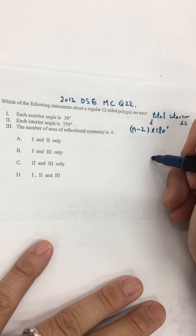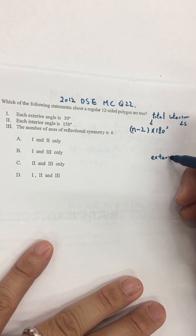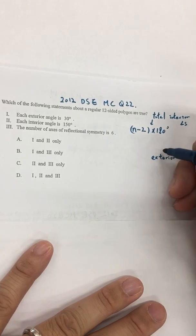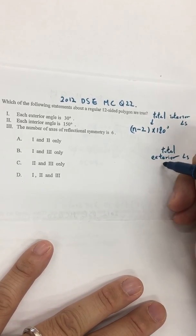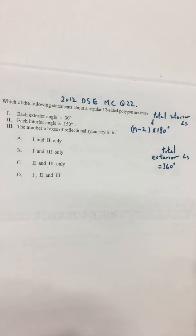So how about exterior angle? Normally total exterior angle is 360 degrees. So the next question is,